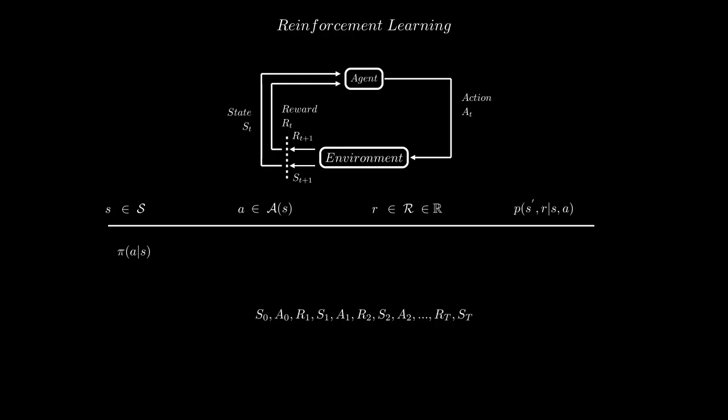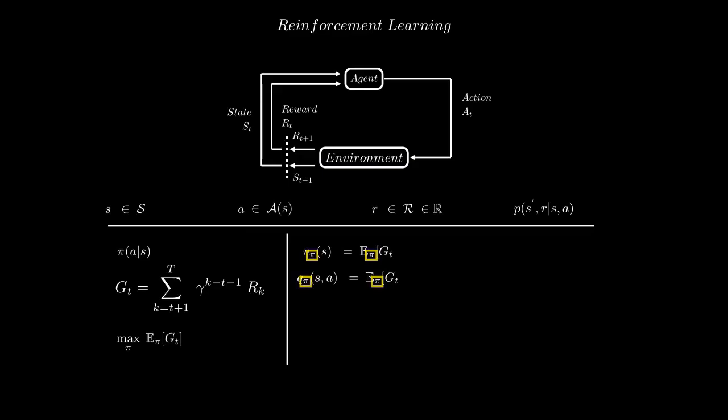Ultimately, our aim is to secure a high discounted sum of future rewards averaged over numerous trajectories. One particular sum is represented as G_T, signifying our overarching goal. Now, to make progress, we can consider the state value functions and action value functions. These offer the expected value of G_T, assuming that our agent is following the policy π, and is at a given state or state-action pair. We can find the optimal policy if we can pinpoint the max of these functions.